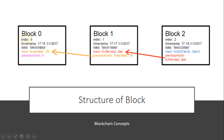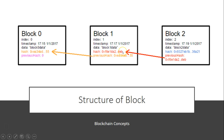Block 0 is my first block, with the index mentioned as 0 and a particular timestamp. Your timestamp will be the date when you are operating the block or completing a particular transaction. Then comes the data associated with it — some block data, along with the hash value and the previous hash. This hash value will be taken as the previous hash in the next succeeding block, which will also have an index, timestamp, and data. Block 2 will similarly have the previous hash equal to the hash value of block 1, creating the chaining structure.